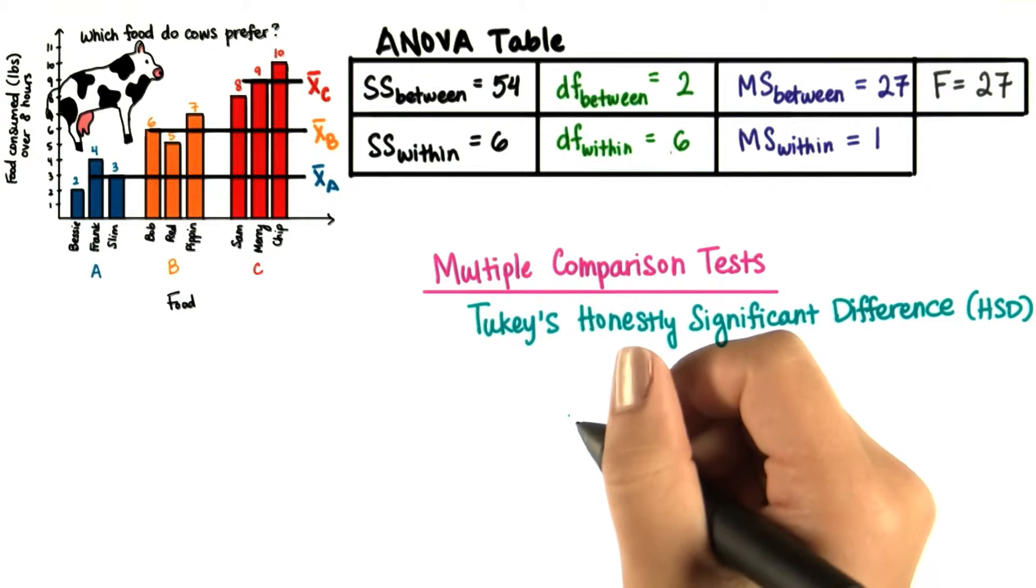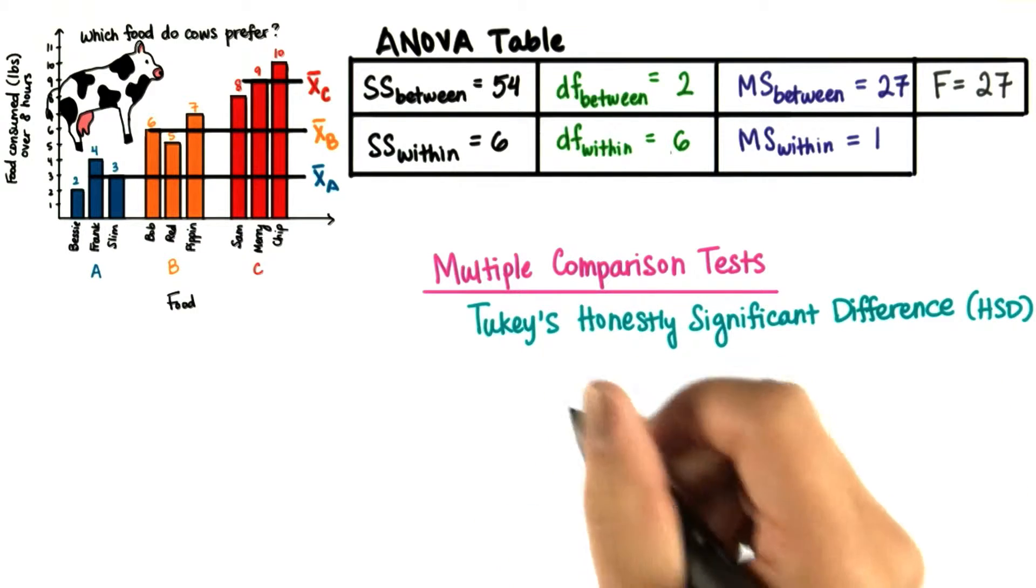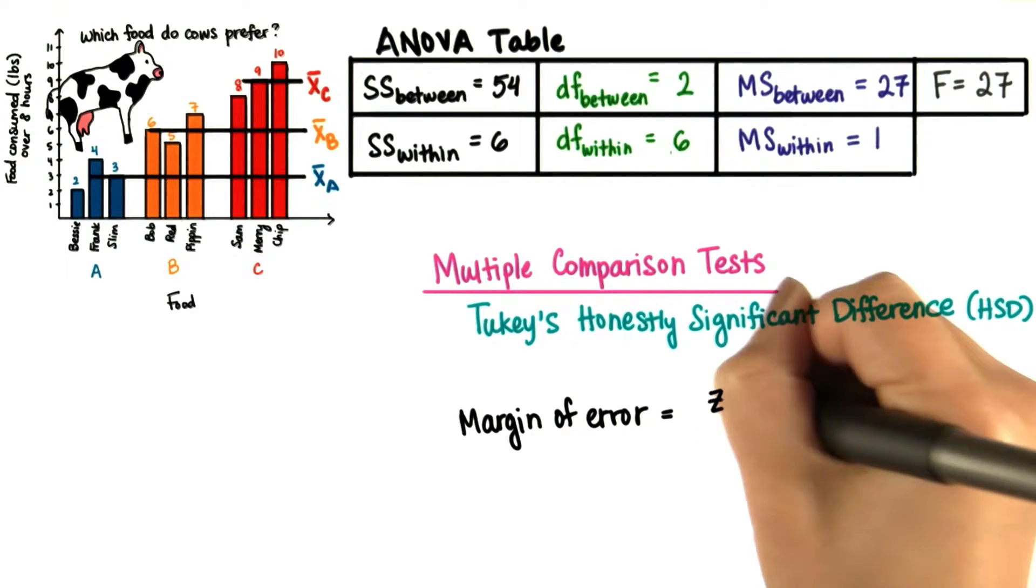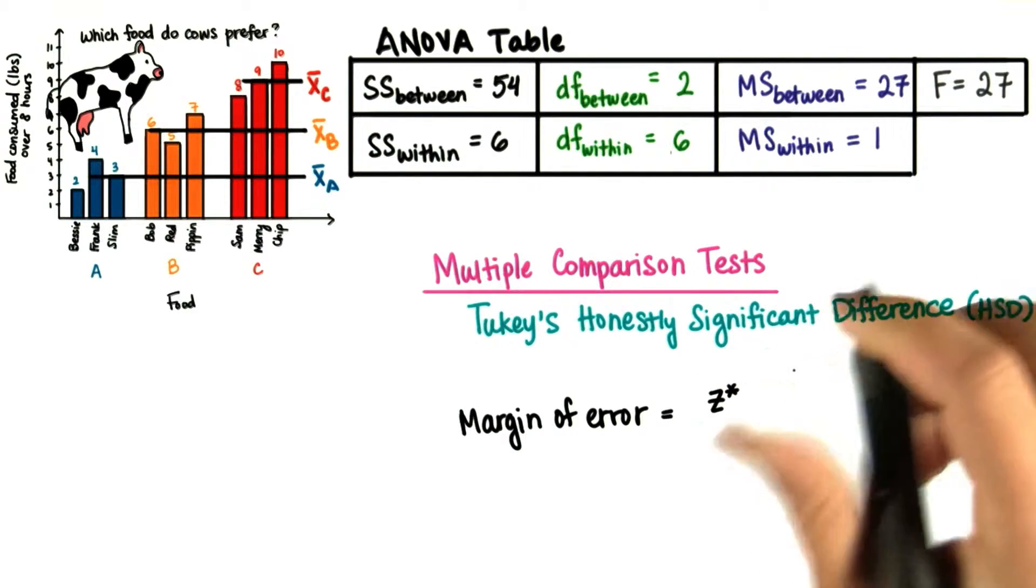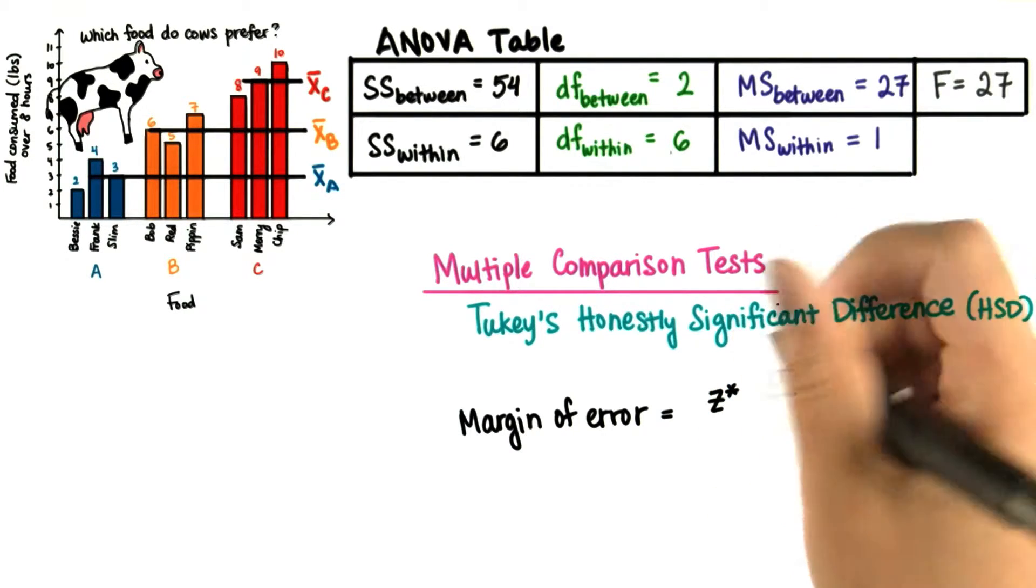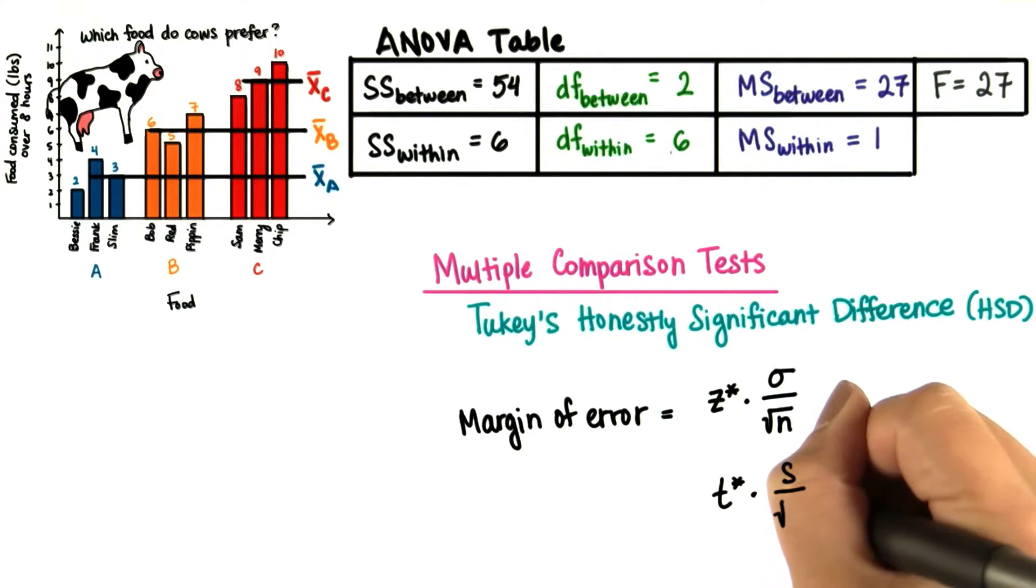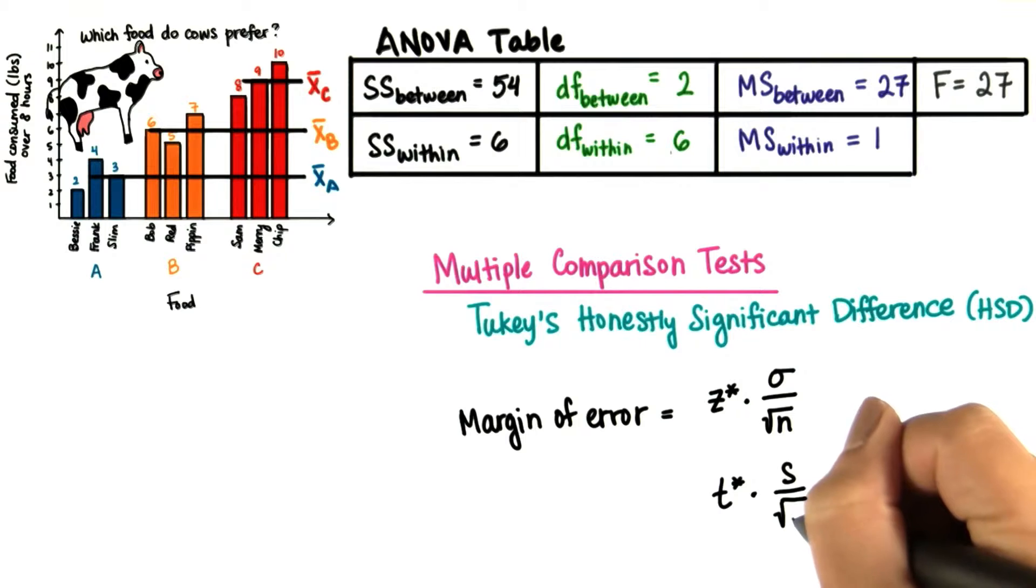The way we calculate Tukey's HSD is just like the margin of error that you've learned before. Remember that with the Z test, it was the Z critical value, denoted Z star, times the standard error. And remember with the T test, it was the T critical value times the standard error.